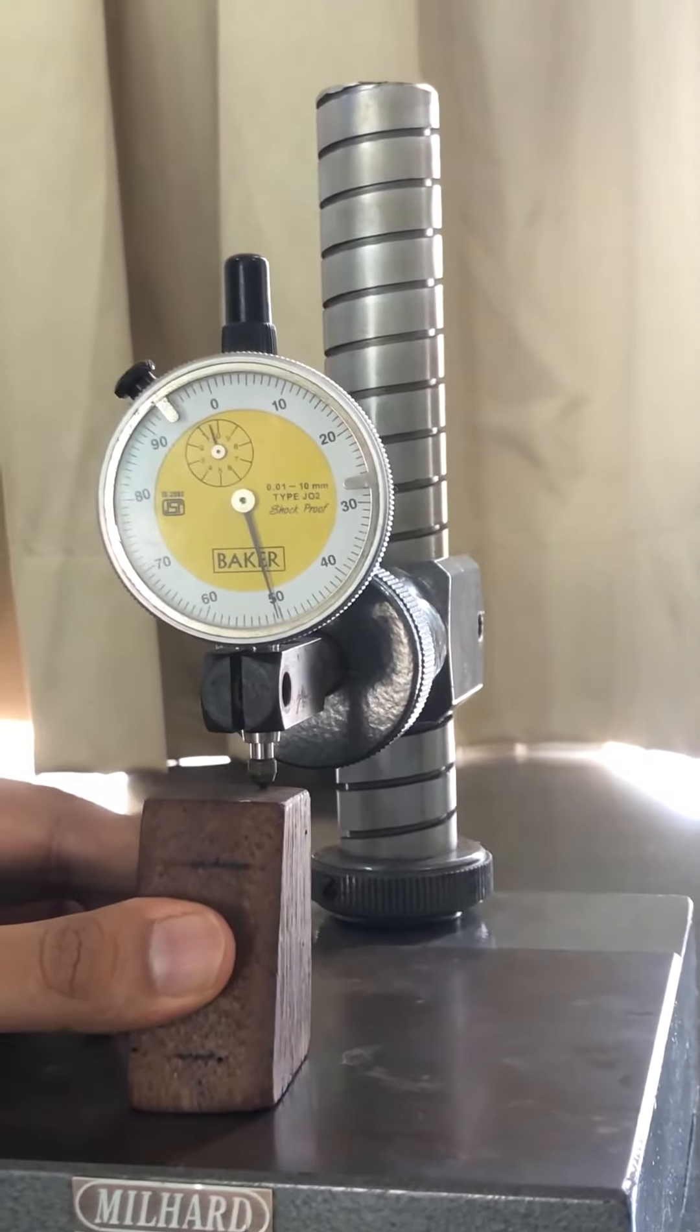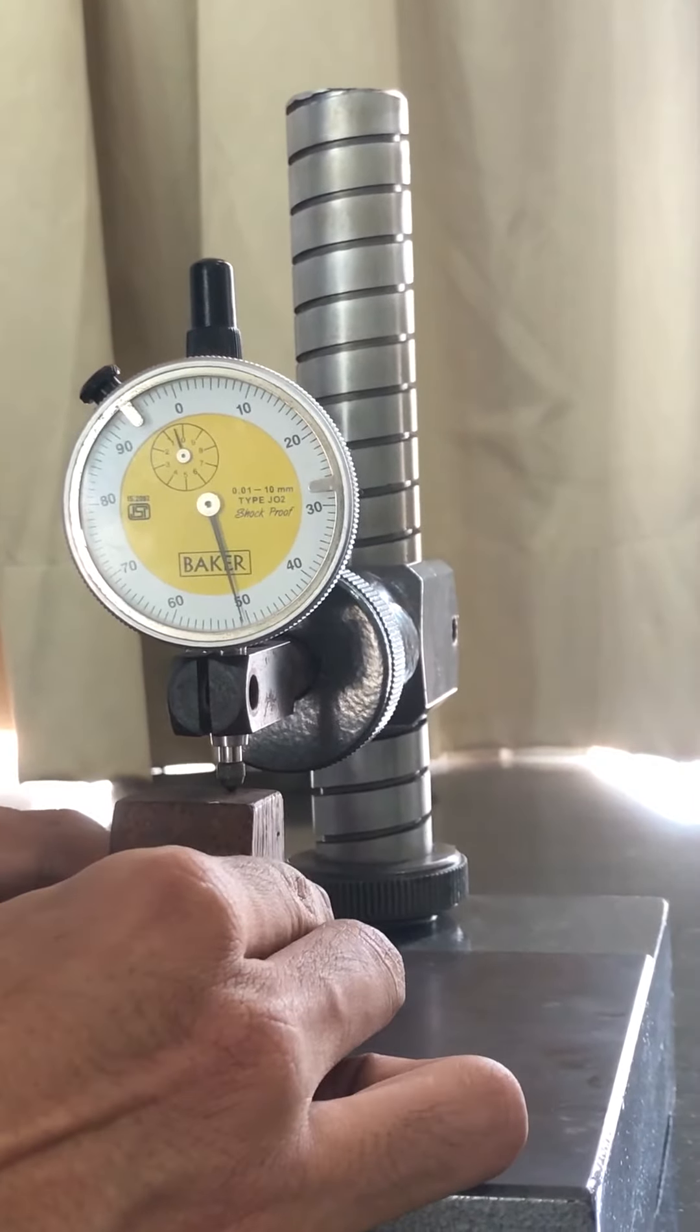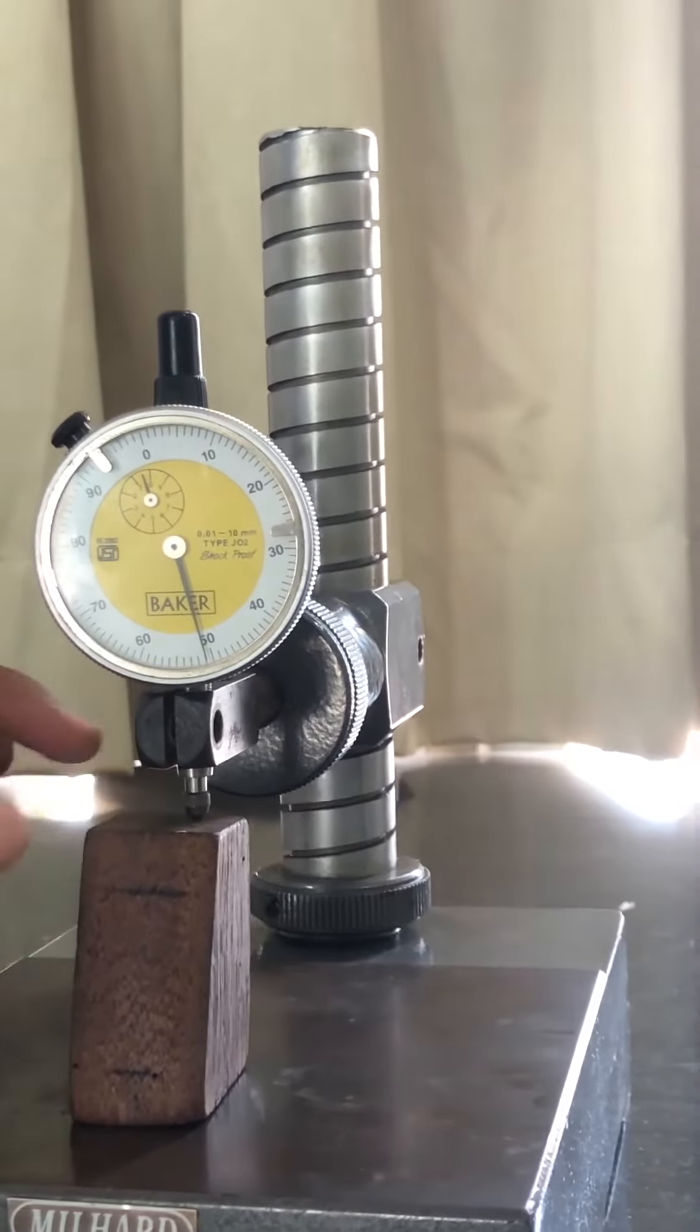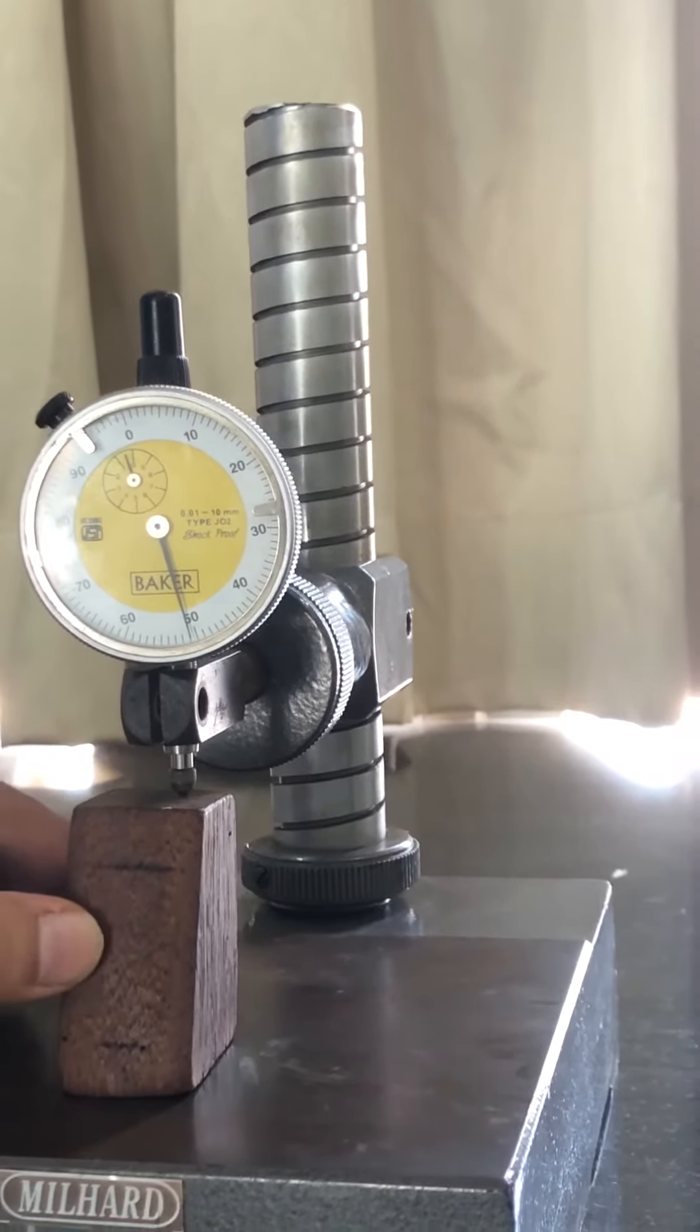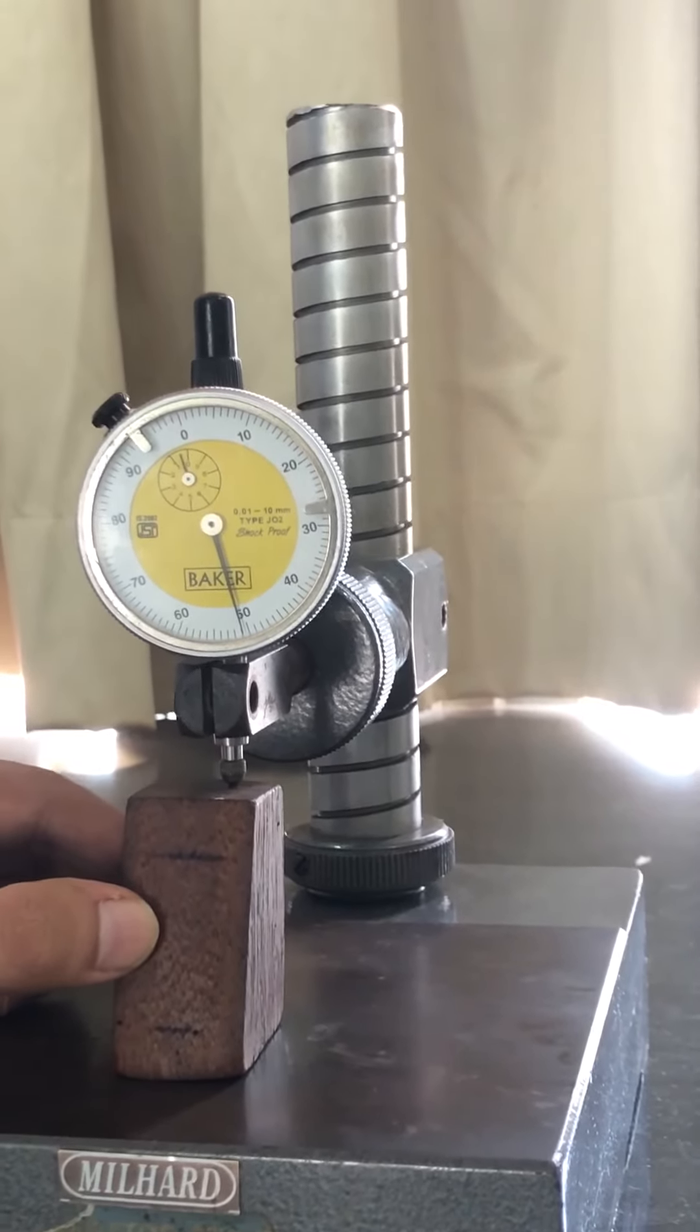Call that reading h1. Similarly, move it with respect to height for readings h2, h3, h4. Take 5 or 6 different readings when sliding the workpiece across the specimen. This will give you the deflection with respect to height.